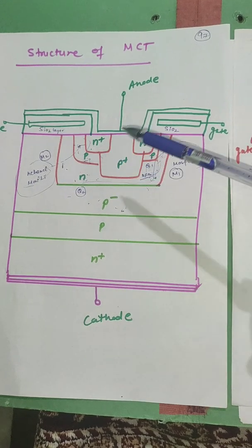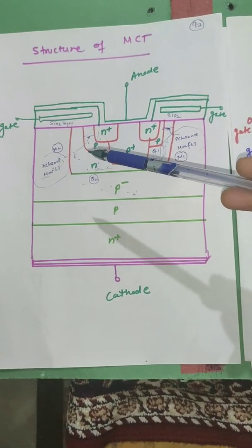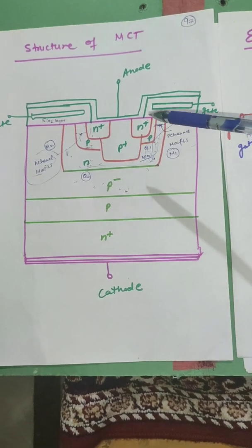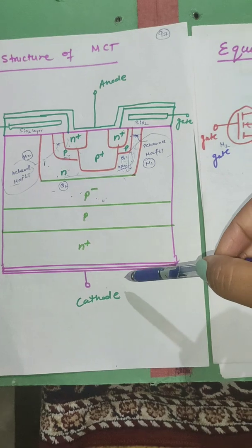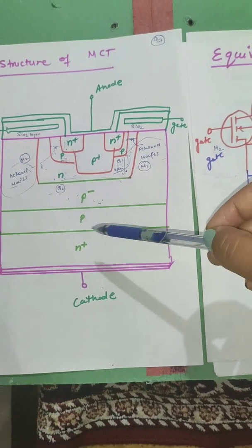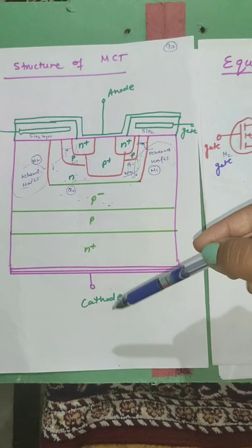Here, three terminal: anode, cathode and gate terminal. Gate terminal is defended by SiO2 layer. So it makes PNP and NPN transistor and two MOSFET, P channel and N channel MOSFET.